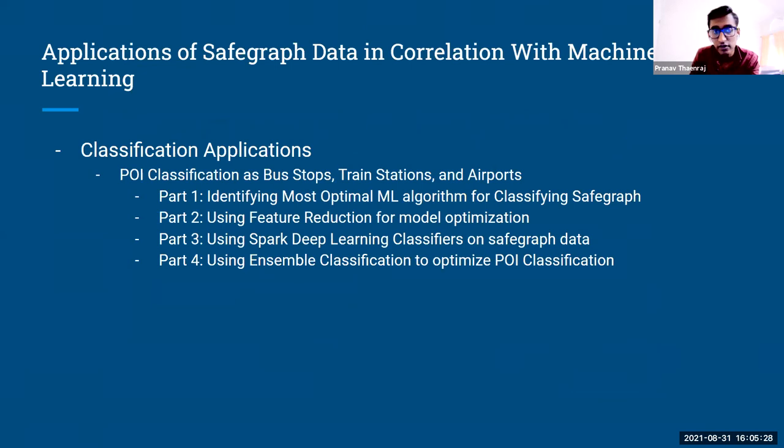And so essentially, the project is revolving around the applications of SafeGraph data in correlation with machine learning. So essentially, this project looks to use classification to classify POIs. And to simplify the classification process, we went ahead and we chose three POI types to classify: bus stops, train stations, and airports. And we ran essentially a four-part project on how to classify these POIs as what they are.